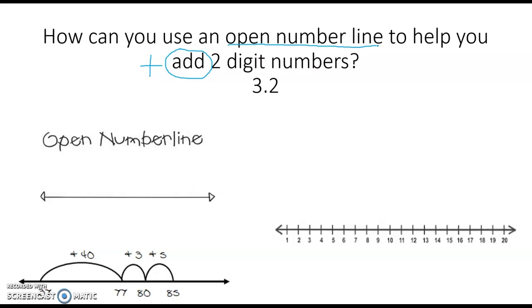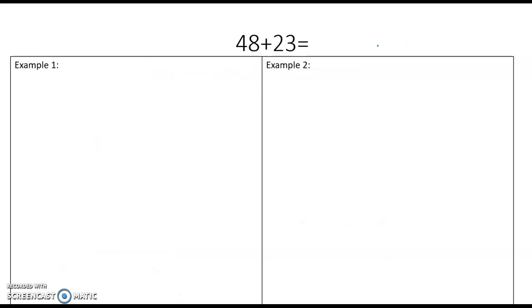So I'm going to show you how to use it in two different ways. We have 48 plus 23. These are our open number lines, so you can see so far we don't have any numbers on them. We have to decide what numbers we want to put on our open number line.